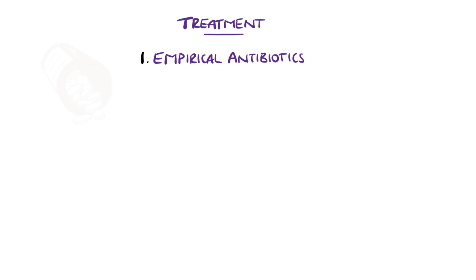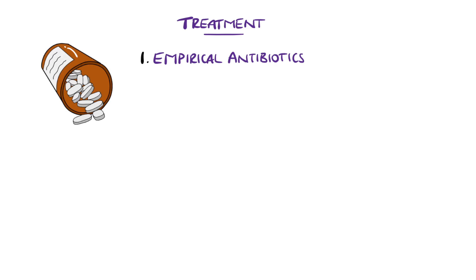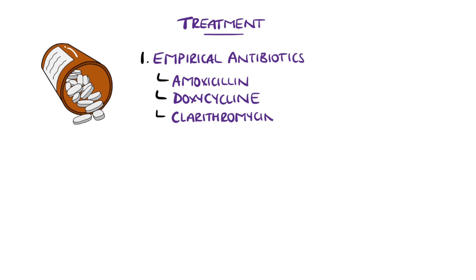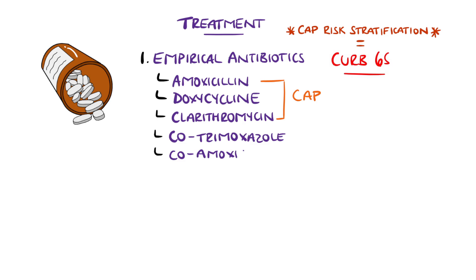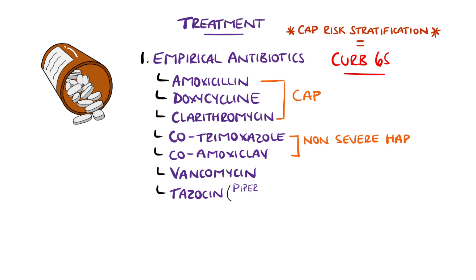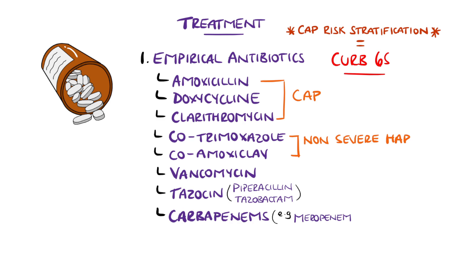The mainstay of treatment is empirical antibiotics — typically for CAP: amoxicillin, doxycycline, or in some areas a macrolide like clarithromycin. In HAP, co-trimoxazole or co-amoxiclav are options in non-severe cases, or vancomycin, tazocin, or carbapenems like meropenem in severe cases or those with higher resistance risk. VAP examples also include these antibiotics.